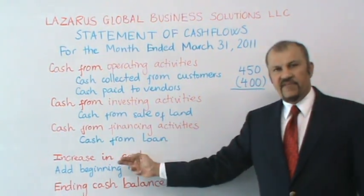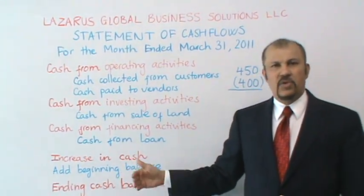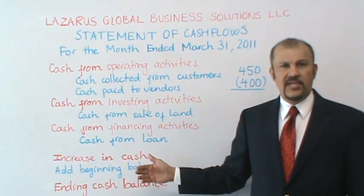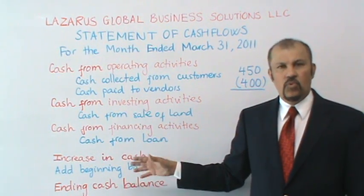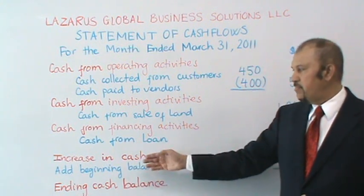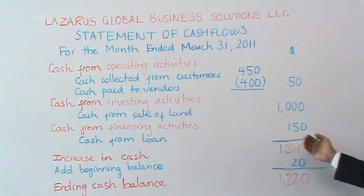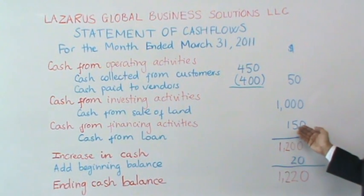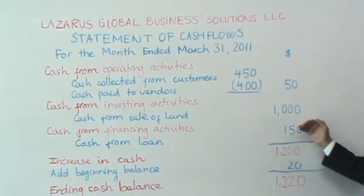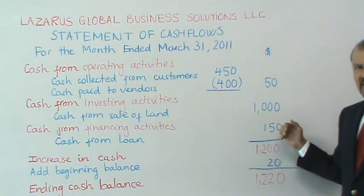Then we have the financing activities section. The broad guideline here is that transactions affecting your long-term debt as well as your equity accounts would be classified in the financing activity section. We have one item mentioned here: cash from loans — cash received from taking a loan in the amount of $150. Since this is the only item, we have a cash inflow of $150 from the financing activities section.